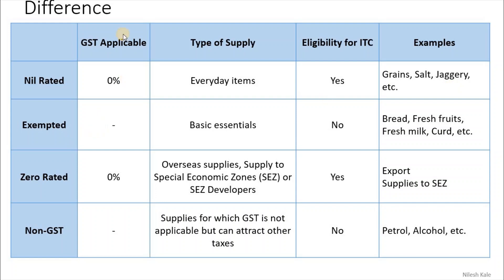Exempted supplies — these do not attract GST. Type of supply? Basic essentials. Eligibility for ITC? No. Examples are bread, fresh fruits, fresh milk, curd.